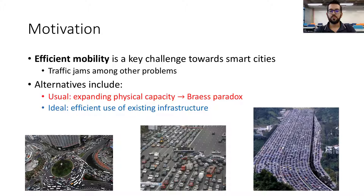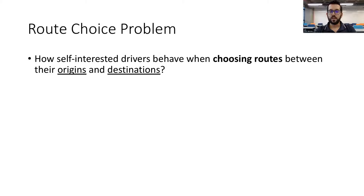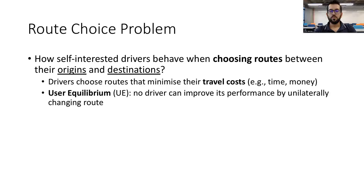In this work, we approach traffic from the perspective of drivers. In the so-called route choice problem, we are interested in how rational drivers behave when choosing routes between their origins and destinations. The answer is that rational drivers choose routes that minimize their travel costs. These costs may include time, money, and so on. When drivers behave in this way, they end up converging to the so-called user equilibrium, in which no driver can improve its performance by unilaterally changing routes. This solution concept is equivalent to the Nash equilibrium.